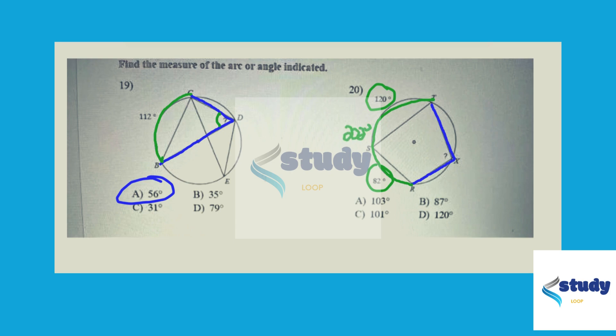So if this angle RXT opens up to 202 degrees worth of arc, and it's on the circle, it's half of that, 101.